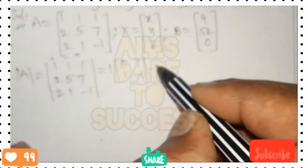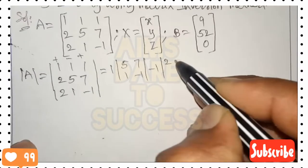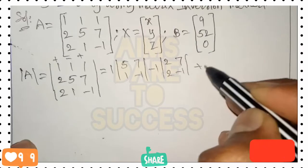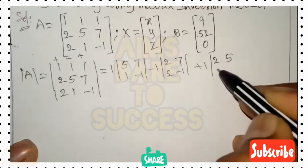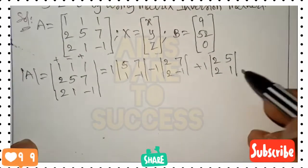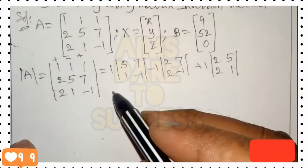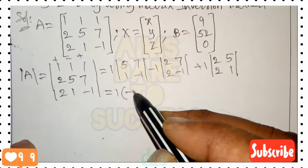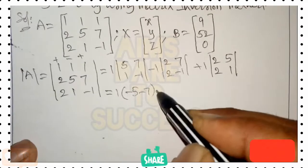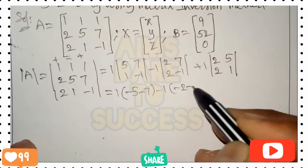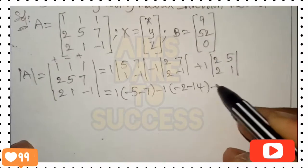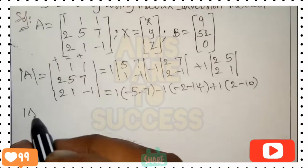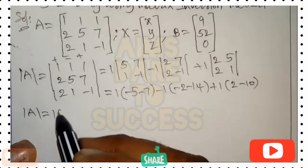Expanding along the first row: 1 times the minor [5 7 / 1 -1], minus 1 times the minor [2 7 / 2 -1], plus 1 times the minor [2 5 / 2 1]. Applying the ad minus bc formula: 1 into (5×(-1) - 7×1), minus 1 into (2×(-1) - 7×2), plus 1 into (2×1 - 5×2).